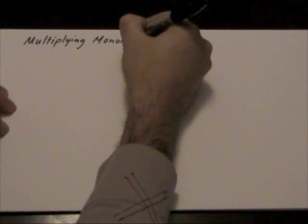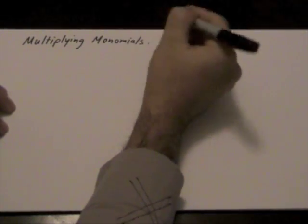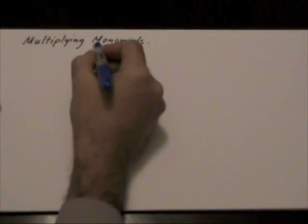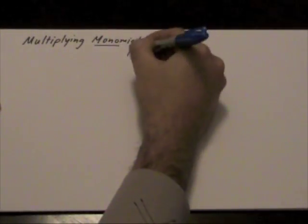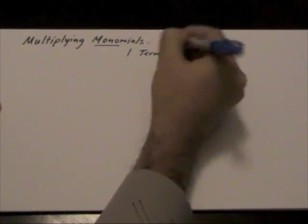Multiplying monomials. The key to this lesson is as follows. When we're multiplying monomials, remember as in the previous lesson on types of polynomials, monomials means one term.